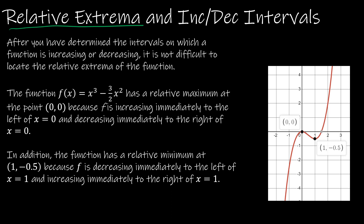We're trying to find the minimums and maximums of a function. In our last video, we did this exact example. We said this one was increasing to 0, then decreasing to 1, then increasing after that. There was a horizontal tangent at 0 and at 1. If a function goes from increasing to decreasing, that point where it switches is a maximum. If it goes from decreasing to increasing, there's a minimum.